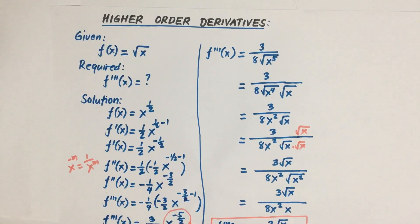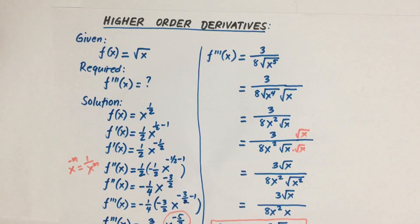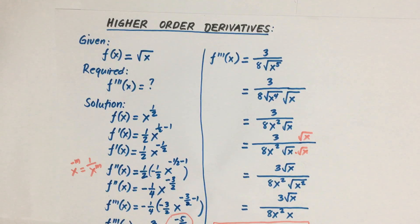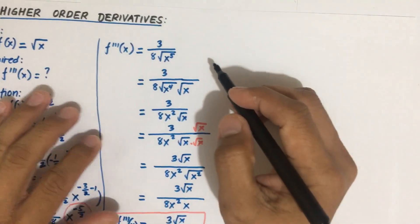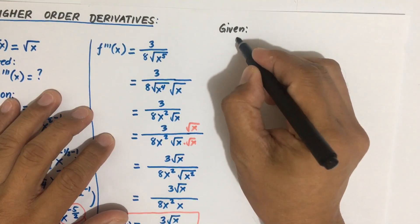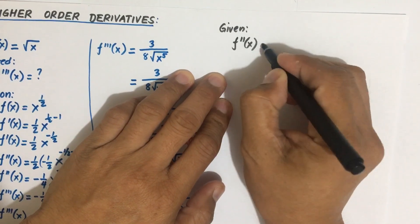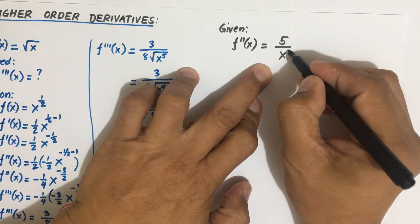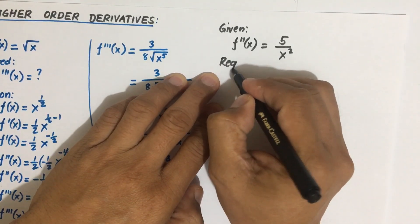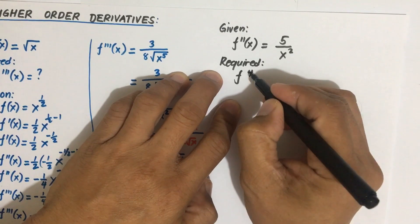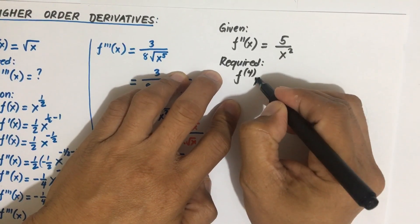Hello class. In this next video I'm going to show you another example. So last time we had this example. Now if you're given F double prime of x equal to five divided by x squared, and you are asked to solve for F...